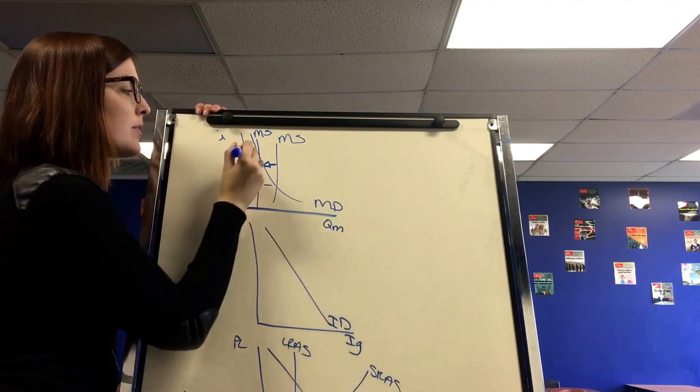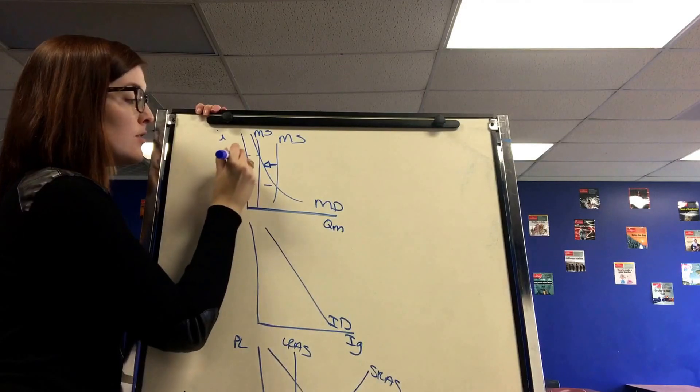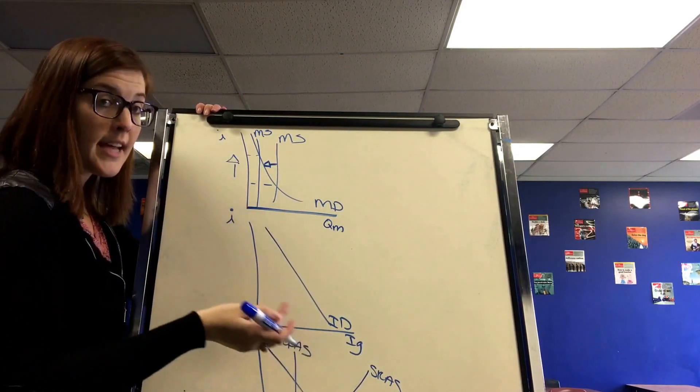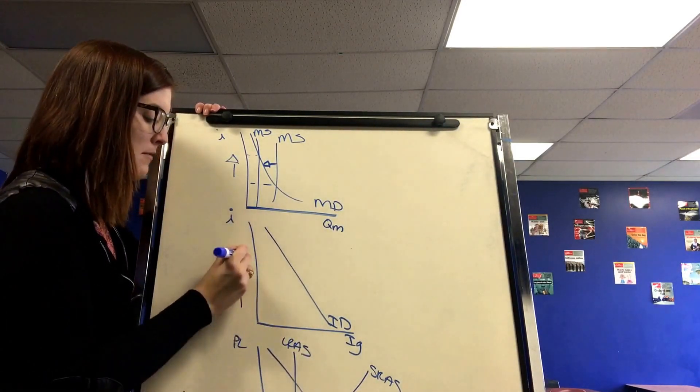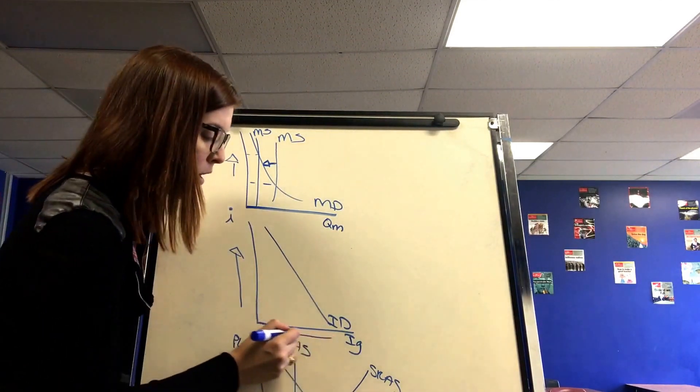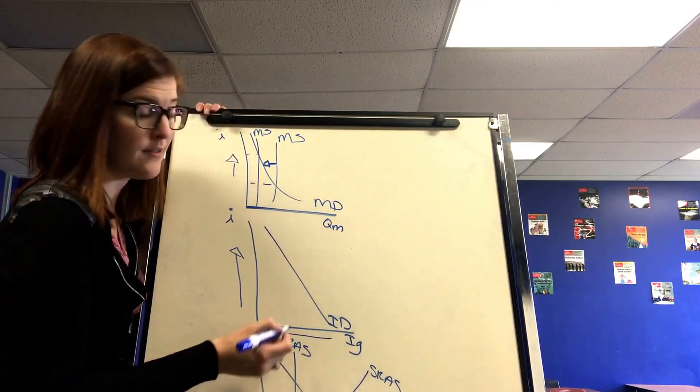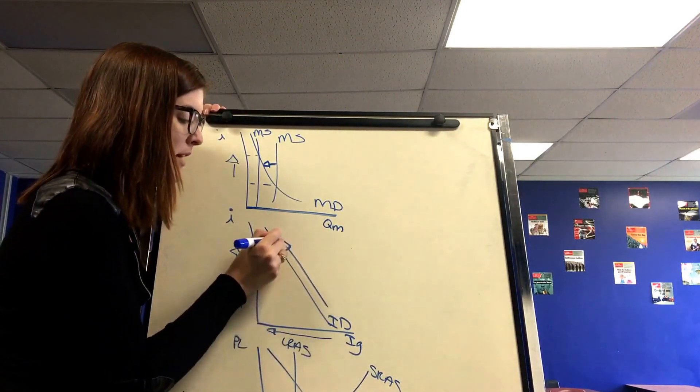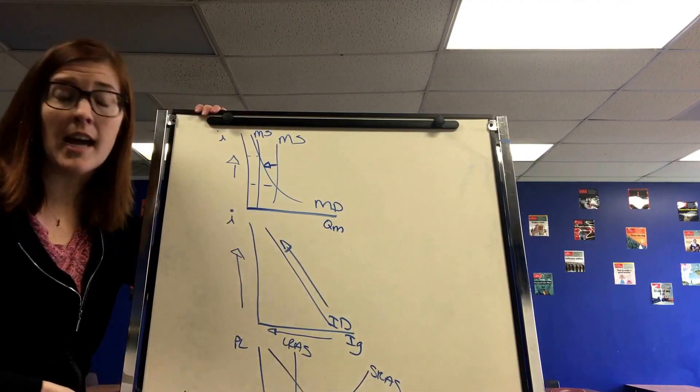All of this would then decrease the money supply. And if the money supply is decreased, nominal interest rates are driven up, which then will relate to gross private investment on the investment demand graph. Nominal interest rates are driven up. We don't want to buy a house. We don't want to invest. So the investment demand graph investment will decrease and will move up along the line.